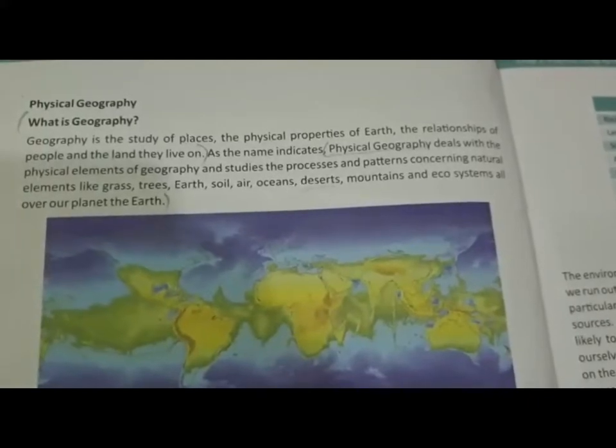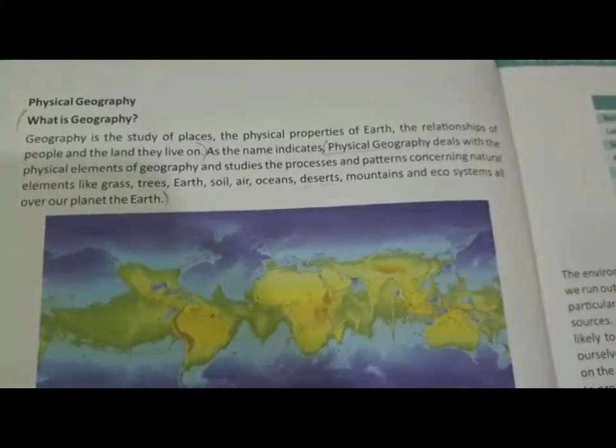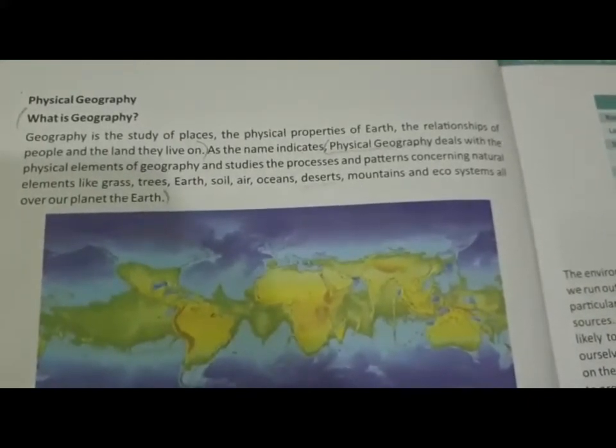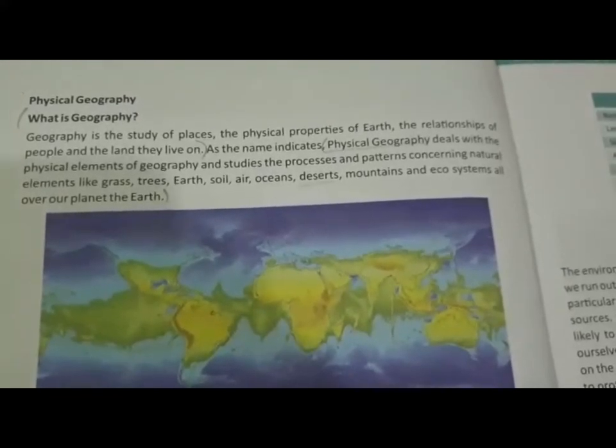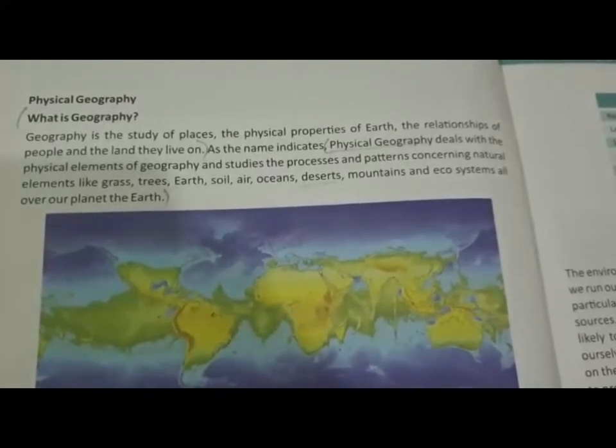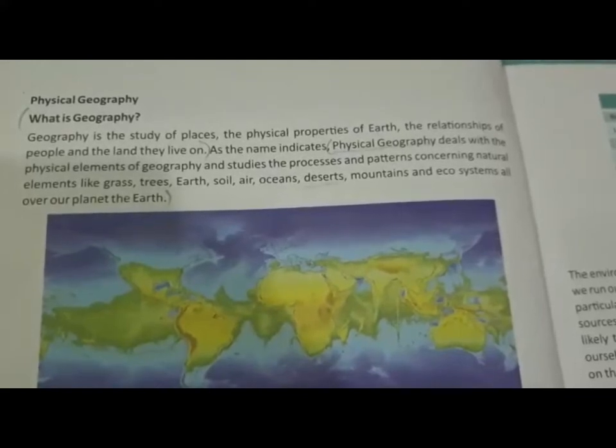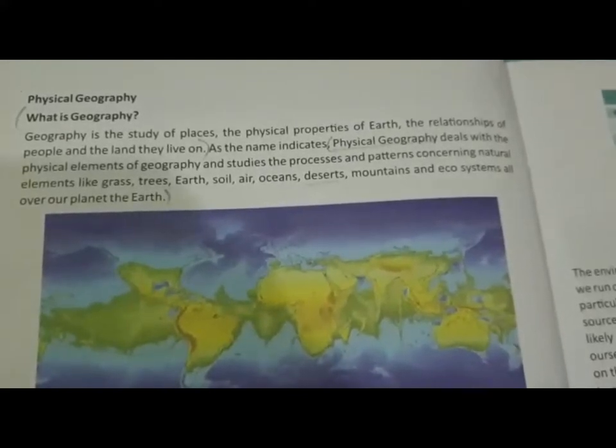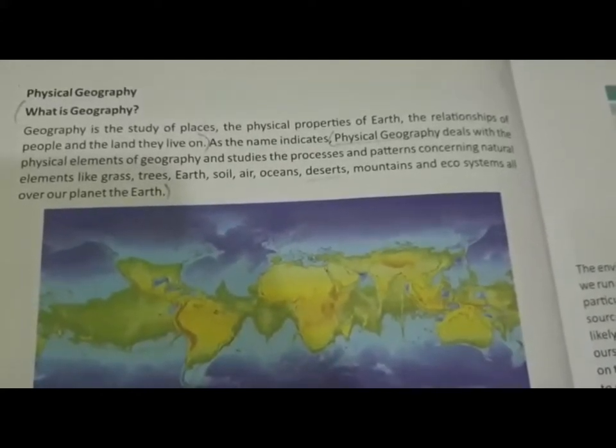As the name suggests, physical geography is the study of anything physical that we can see and feel. It is the study of the process and patterns of elements like grass, trees, earth, soil, air, ocean, desert, mountain, and all the ecosystems on the earth.